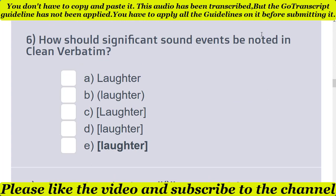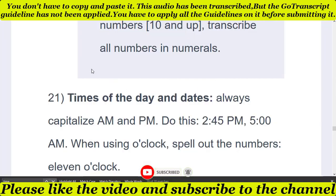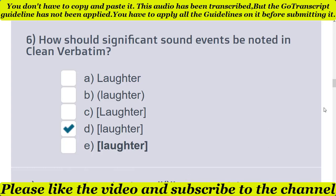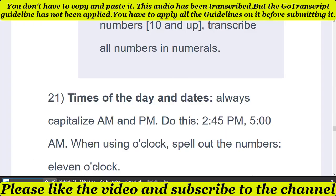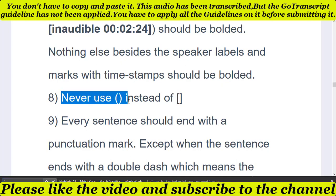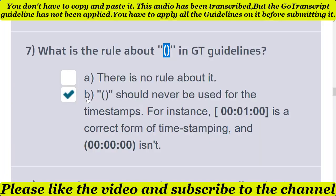Sixth question: how should significant sound events be noted in clean verbatim? There are five different options. The correct option is D. If you have any doubt, simply read the transcription guideline to understand why. Seventh question: what is the rule about small brackets in the transcription guideline? There are two options and the correct option is B — small brackets should never be used for timestamps. For example, the square bracket form is correct for timestamps, not the small bracket. That's why option B is correct.